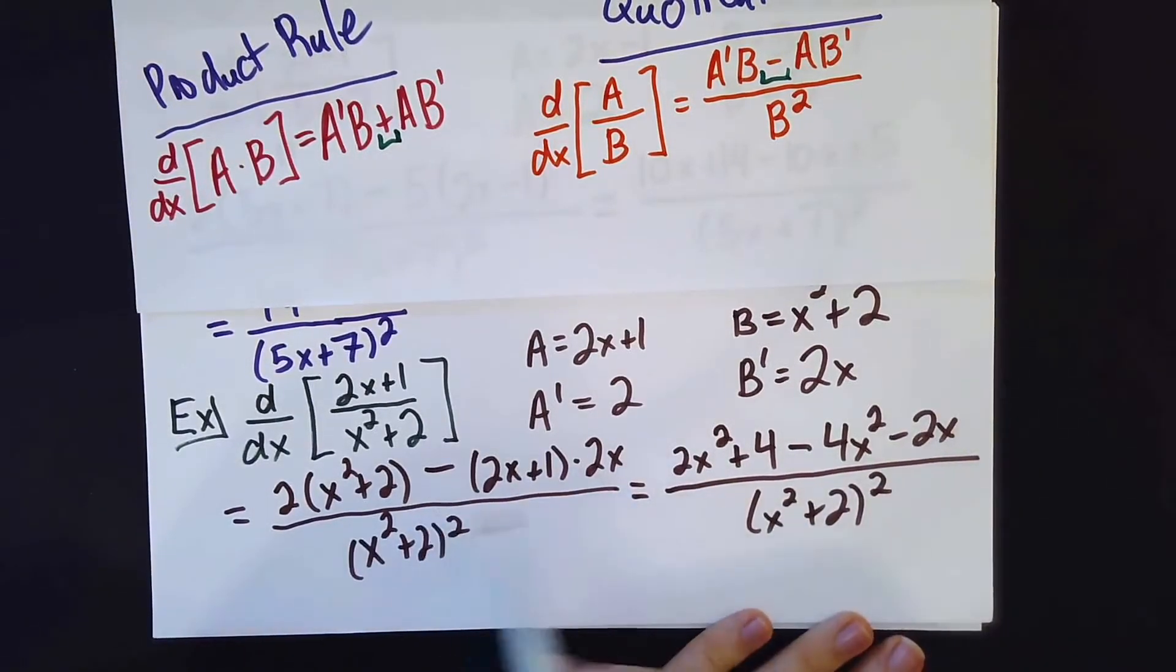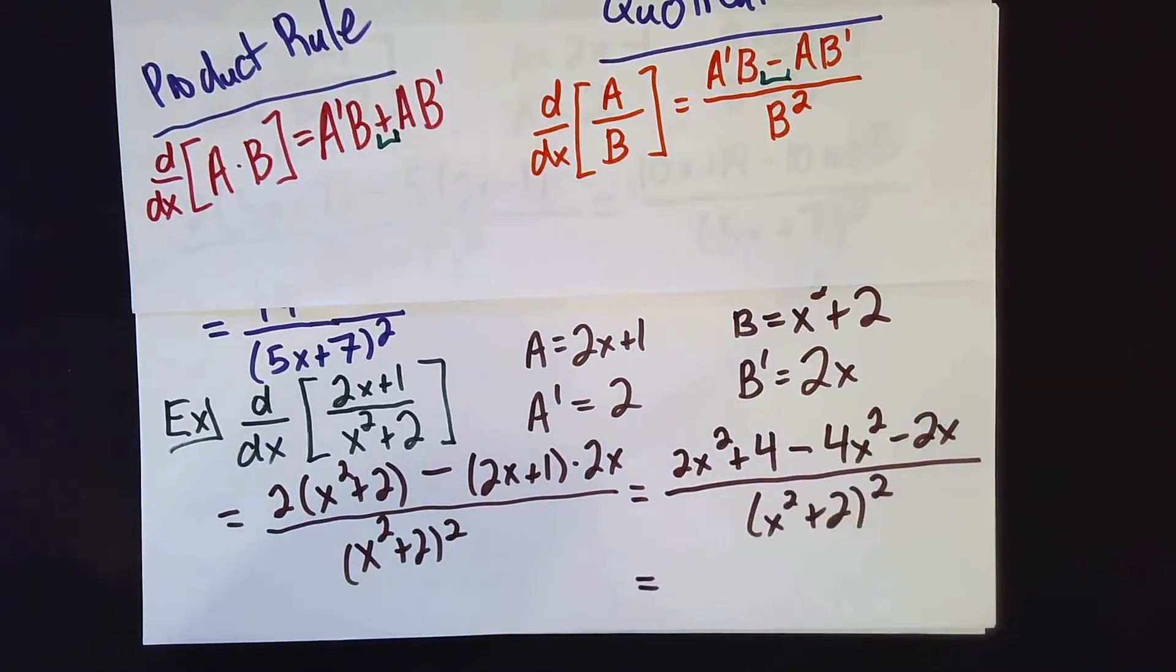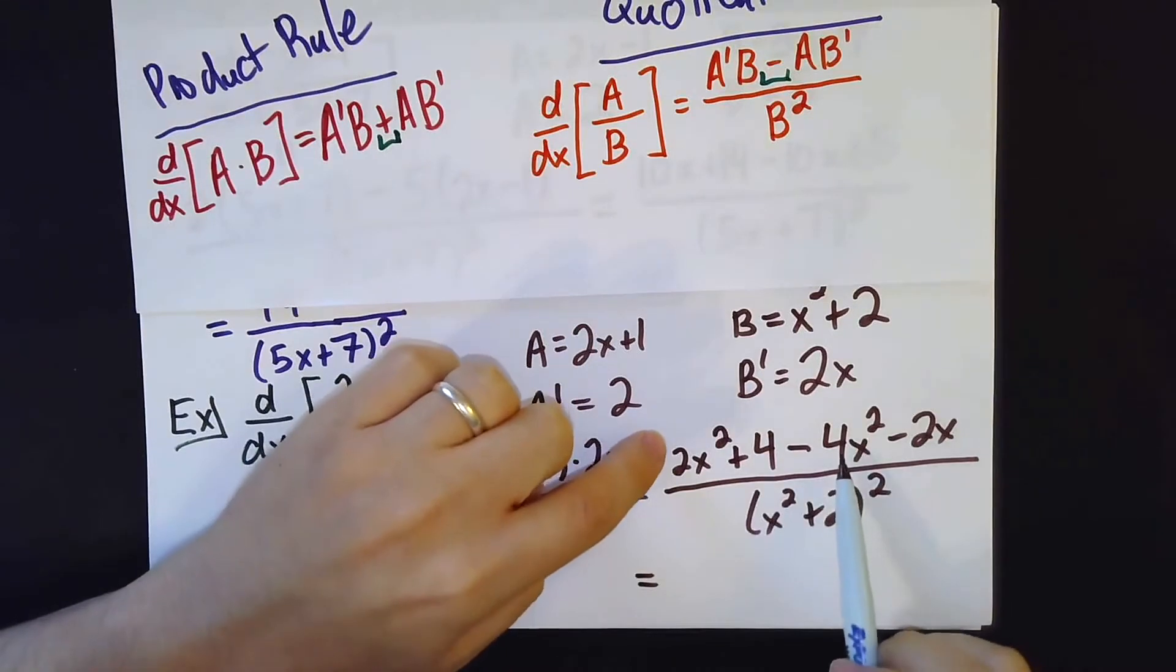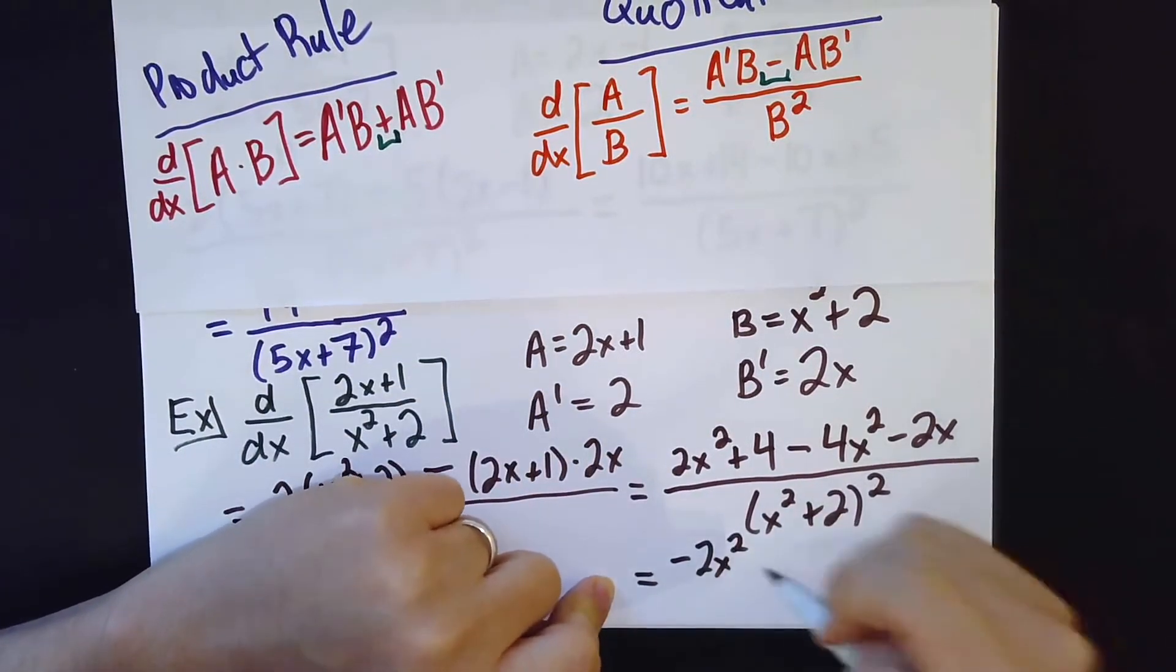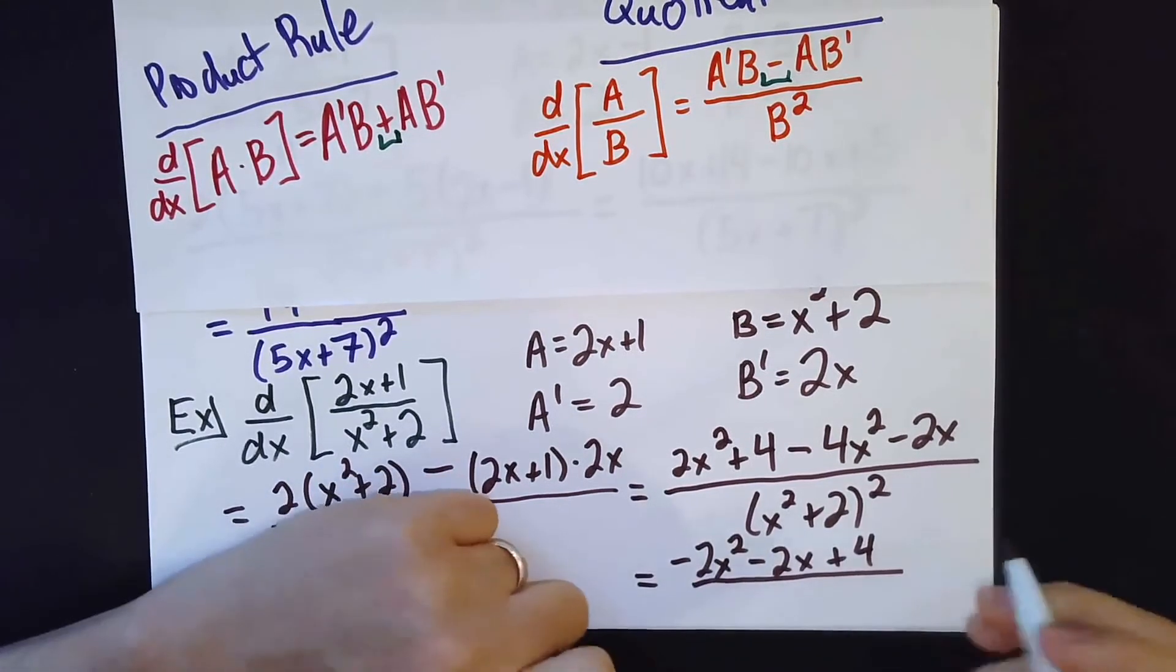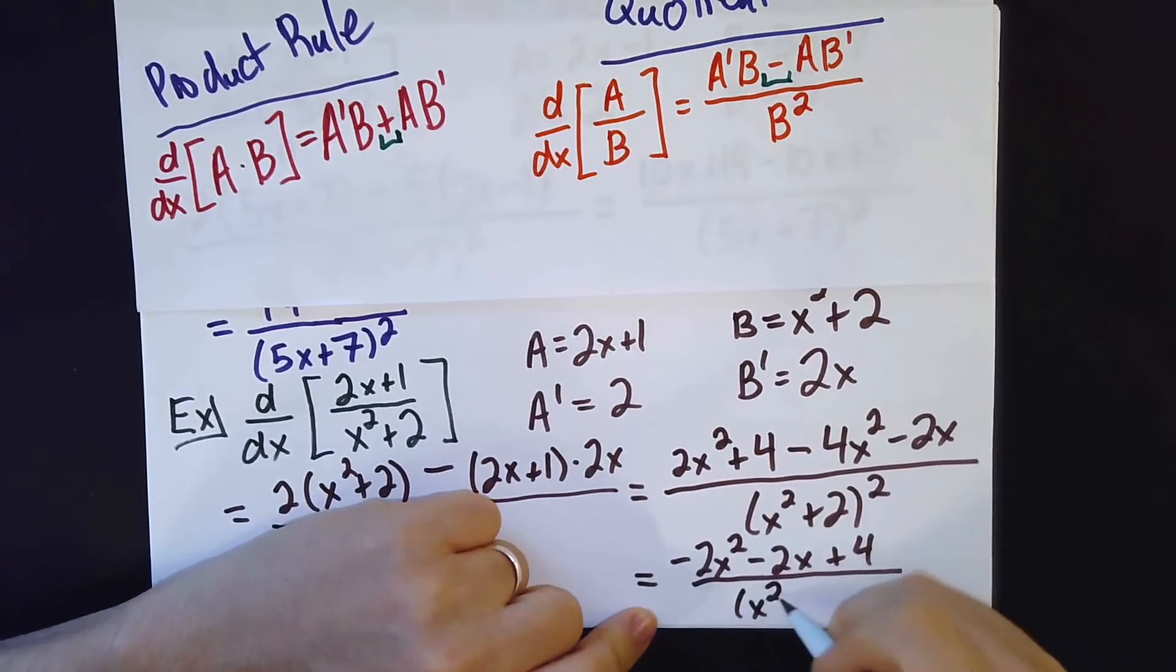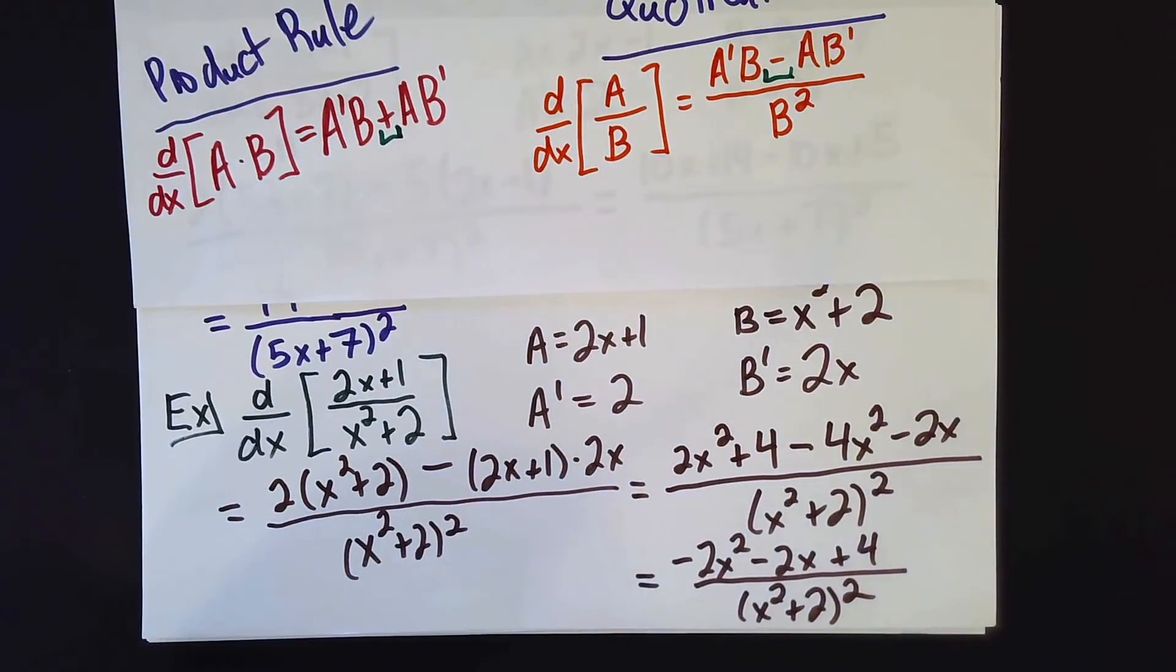Okay, so I distributed this minus sign after multiplying this out, so that gives me a minus 4x squared minus 2x plus 4, divided by x squared plus 2 squared. And I don't think I can simplify that anymore.